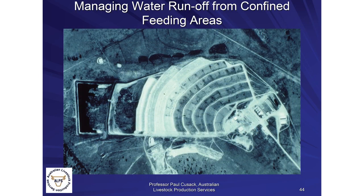Managing runoff from confined feeding areas: the only adequate way to ensure you're not contaminating other water on your farm from an intensive feeding area is to place an exclusion bank around the outside of the system. A series of drains run into a sedimentation pond where solids fall out, then a weir where liquid flows over into a retention pond that contains all those nutrients, preventing contamination of your other water sources.